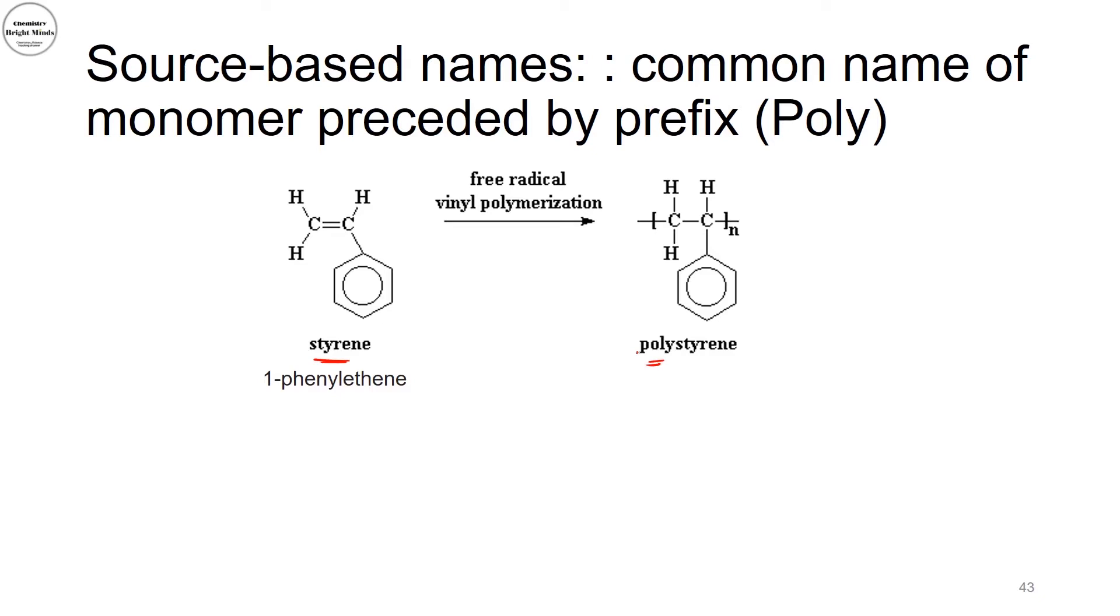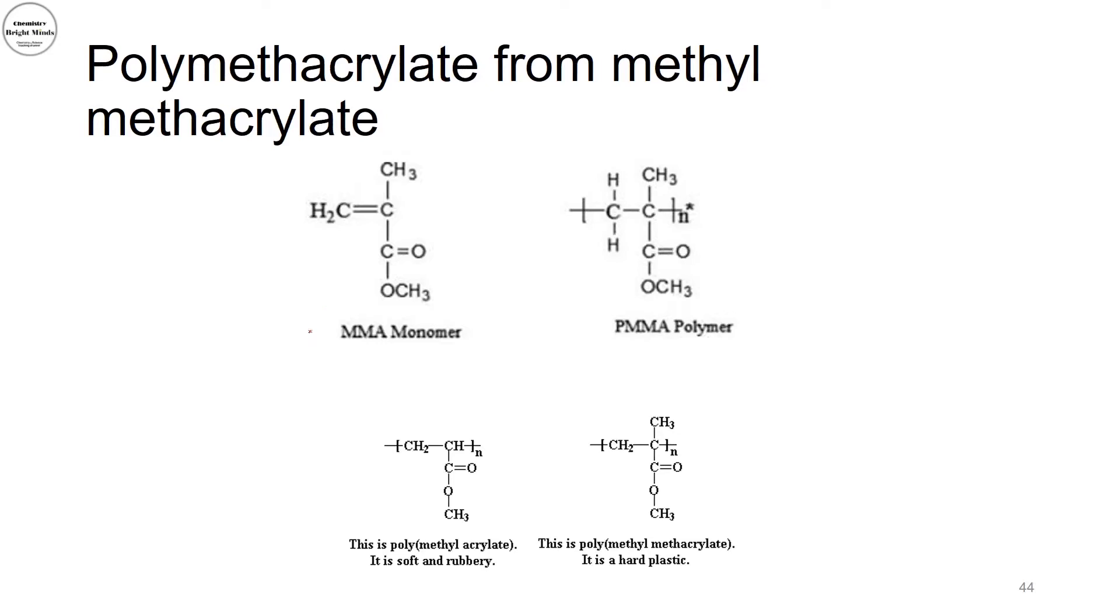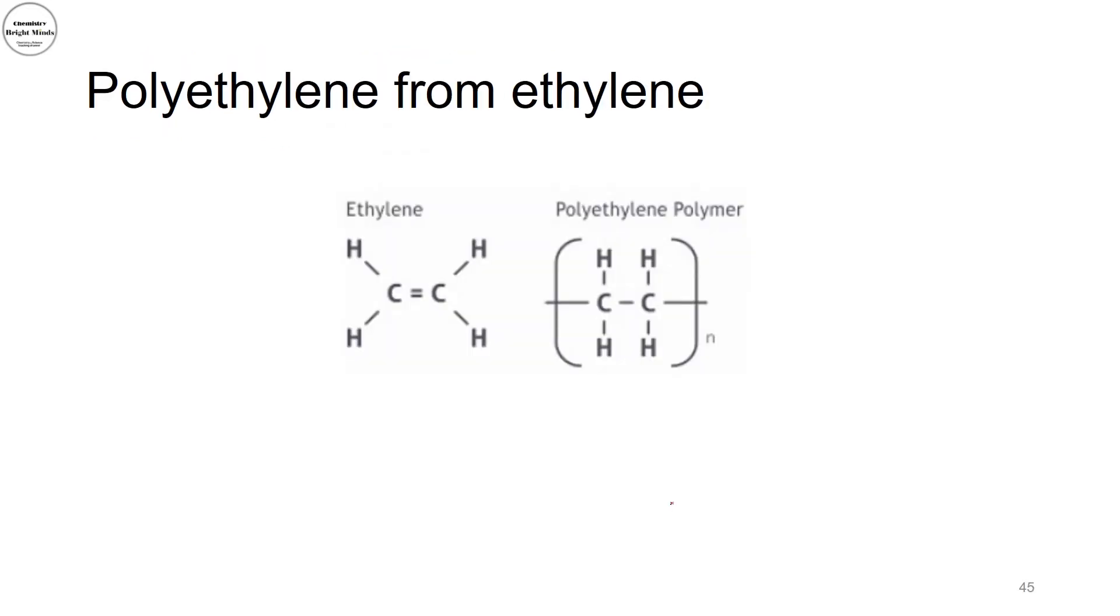Now, if I started from monomer such as methyl methacrylate, I would name my polymer to be polymethyl methacrylate. So this is the methyl methacrylate and this is the poly form of my polymer. Now, for ethylene, we usually put the word poly as well. So polyethylene.